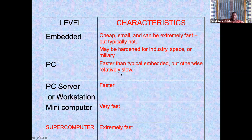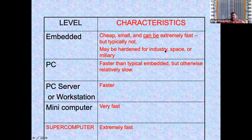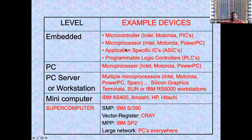I used to have prices on these slides but that changes too often. Embedded systems are cheap and small, can be extremely fast but typically aren't, and may be hardened for industry, space, or military use. PCs are faster than typical embedded but relatively slow overall. Minicomputers are very fast, and supercomputers are designed to go as fast as possible.